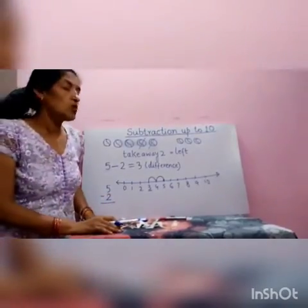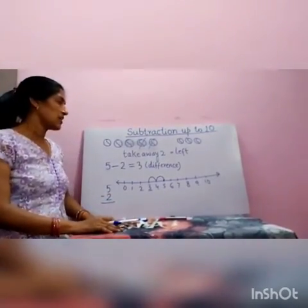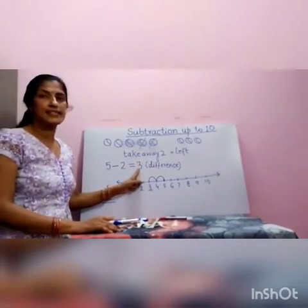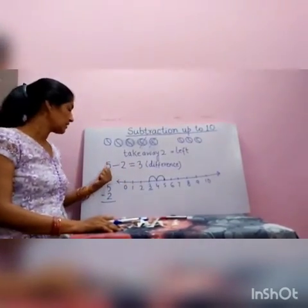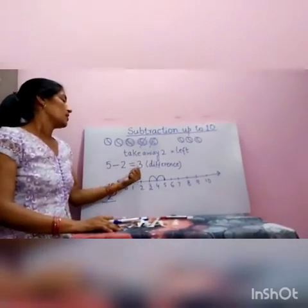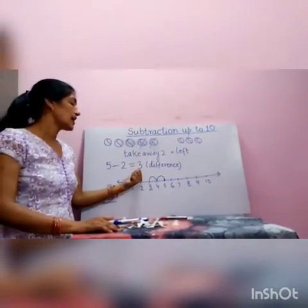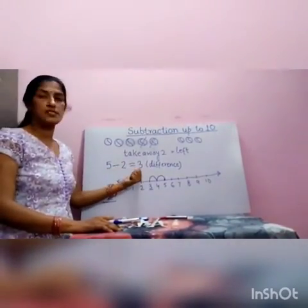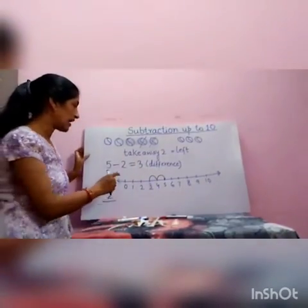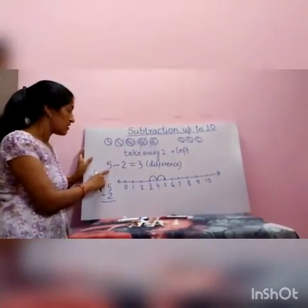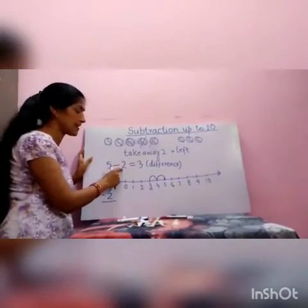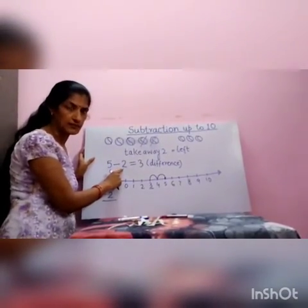One thing more: when we are subtracting, we always get the lesser number than the first number given — the answer is less than this number. And when we are writing the two numbers, always write the bigger number first, then the second number that is to be taken away.